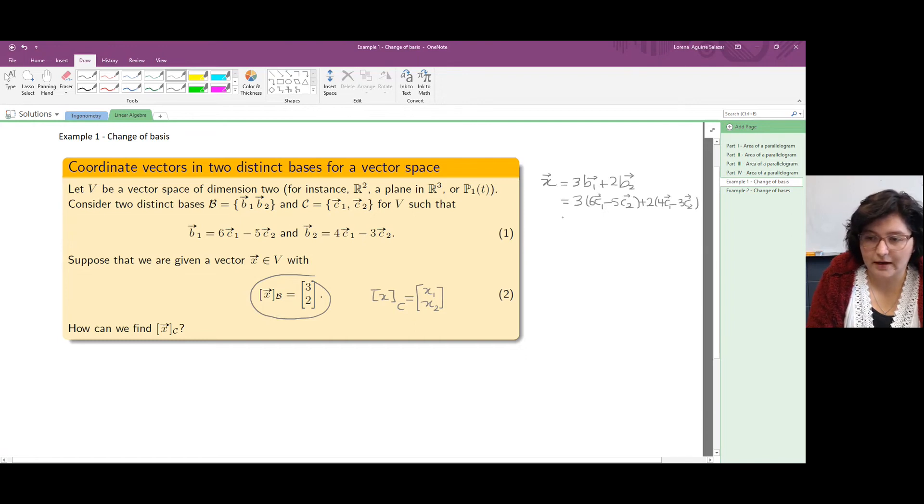That way we have 18C1 coming from the first multiplication, and then plus 8C1, that's 26C1. And then minus 15 minus 6, that's minus 21C2.